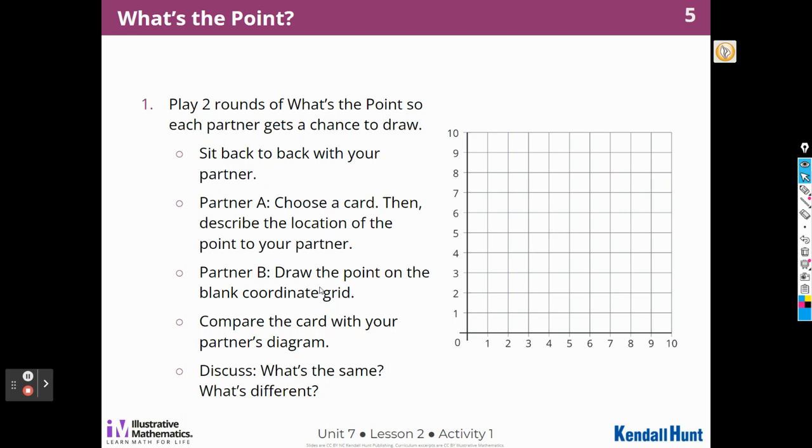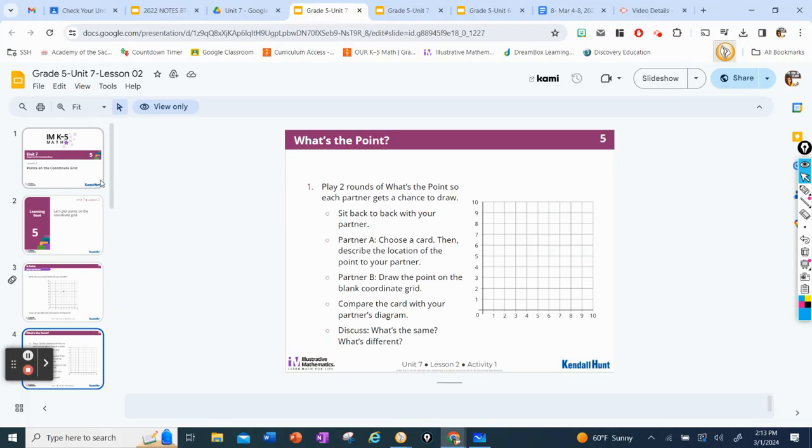I get to play another game called What's the Point? We're going to play two rounds of What's the Point so each partner gets a chance to draw. Sit back-to-back with your partner. Partner A chooses a card and then describes the location of the point to your partner. Partner B, draw the point on the blank coordinate grid. Compare the card with your partner's diagram. Discuss what's the same and what's different. All right, so it's only me in here, so I'm just going to do this one time. But let's get my cards out. Here are my cards.